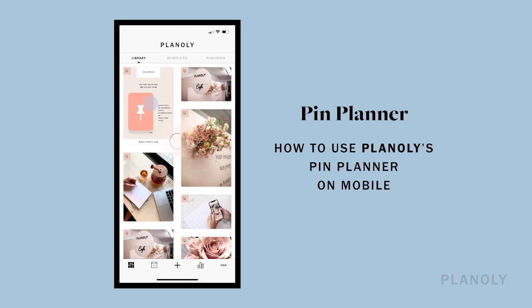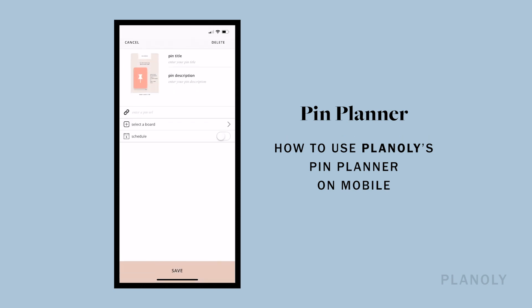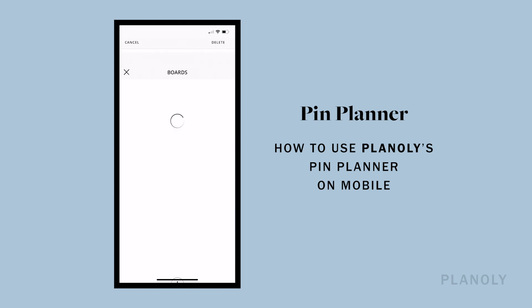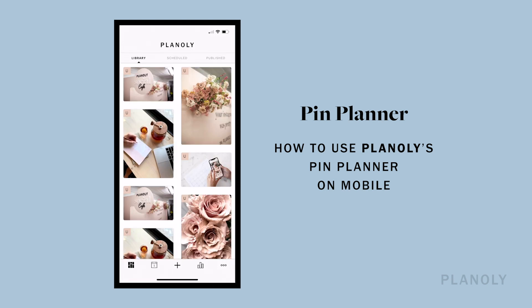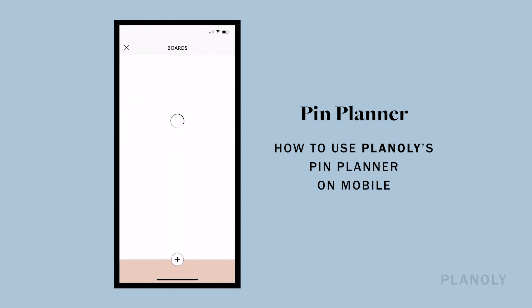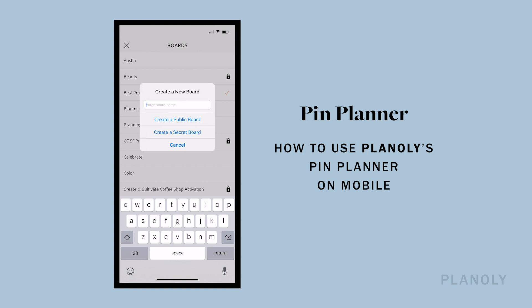Manually open each pin by tapping on it and then enter the corresponding information — your pin title, pin description, and pin URL. Then select the board you'd like for it to pin to, and select the date and time to schedule it. Tap Save. Your pin is now scheduled and will automatically publish for you. You can also create a new board when choosing a board by hitting the plus icon at the bottom of the screen. You'll also have the option of making it a public board or a secret board.